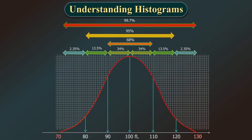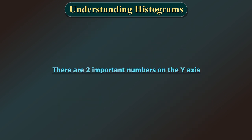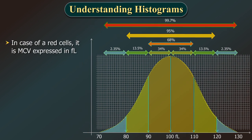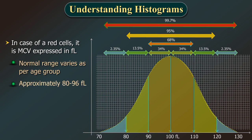Looking at the base of this example, the spread is 60 FL (130 minus 70 FL). There are two important numbers on the Y-axis. One is 100%: a vertical line from the peak of the curve to the baseline denotes the mean volume. In the case of a red cell, it is the MCV expressed in FL, with a normal range of approximately 80 to 96 FL. In the case of a platelet, it is the MPV, that is 8 to 12 FL.